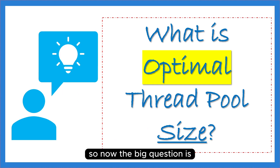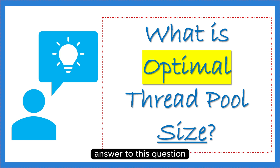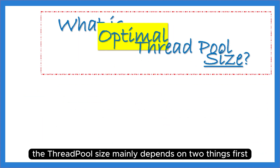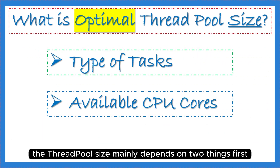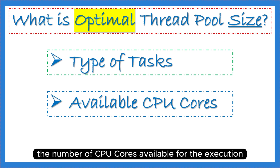Now the big question is: how do you decide an optimal thread pool size? There is no simple and straightforward answer. The thread pool size mainly depends on two things: first, the type of task you want to perform, and second, the number of CPU cores available for execution.